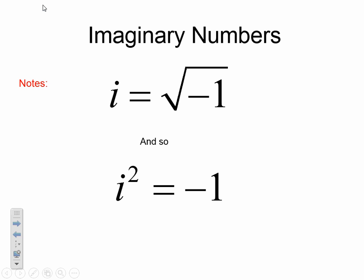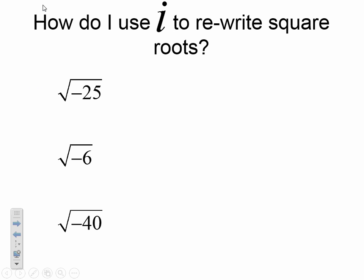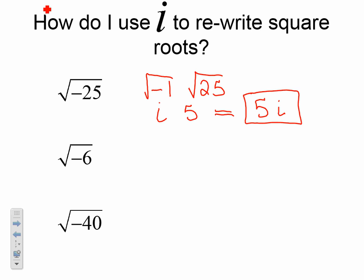Here we go for some examples — you guys need to write down everything on these next three slides. How do I use i to rewrite a square root? Example number 1: square root of negative 25. First, we write it as square root of negative 1 times square root of 25. We know the square root of negative 1 is i, and the square root of 25 is a perfect square, so it is 5. Writing the number first, our answer is 5i.